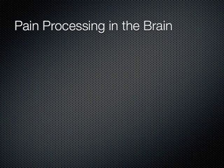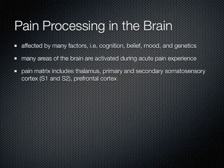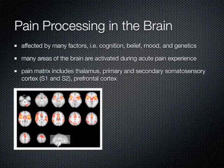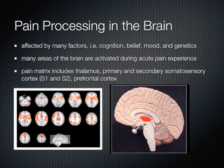Pain processing in the brain is affected by many factors, including cognition, belief, mood, and genetics. Many areas of the brain are activated during the acute pain experience, as seen in functional MRI imaging. This is referred to as the pain matrix, which includes the thalamus, primary and secondary somatosensory cortex (S1 and S2), as well as the prefrontal cortex.